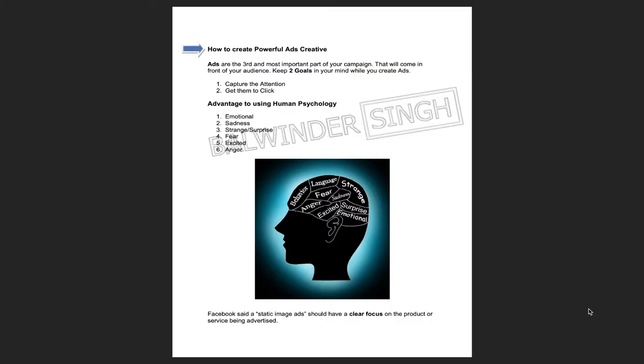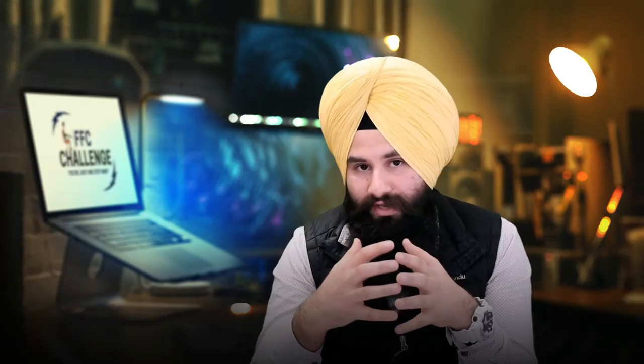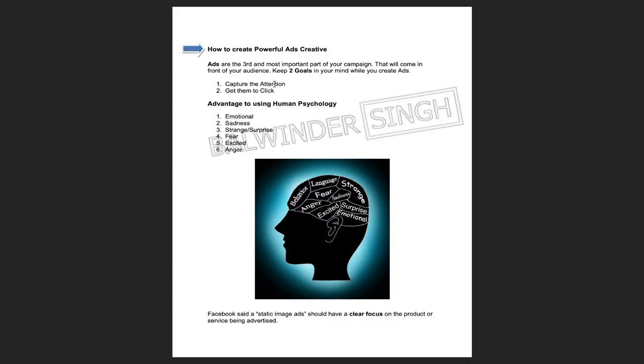In this phase you need to think about how you can capture the customer's attention — that will be your goal. This is the third and last phase of your campaign. Before starting, you need to keep two goals in mind. The first goal is to capture the customer's attention, because your customer is not on social media to buy your product — they are there to connect with friends. The second goal is to get them to click, because once they click on your ad, your pixel will capture their interest.